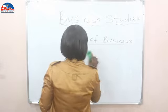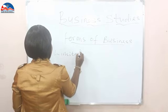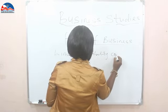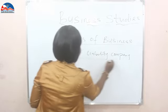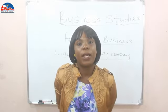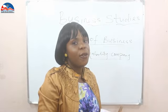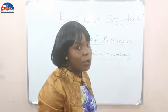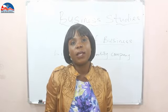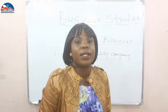Limited liability company. What is a limited liability company? That is another form of business. A limited liability company is a form of business where the individuals who own this business, their risk only ends with what they contribute into the business. That is to say that a limited liability company is a kind of business whereby the capital contributed into the business is only what the individual risks.